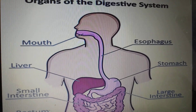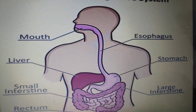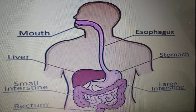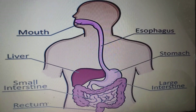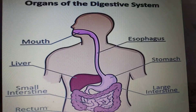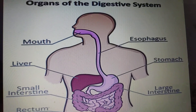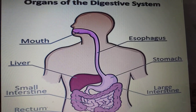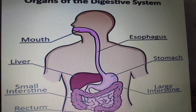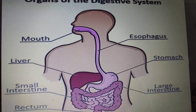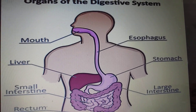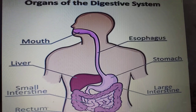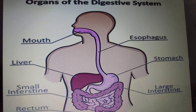The food passes from the mouth to the stomach through a muscular tube called the esophagus. Inside the stomach, the food is broken further into smaller pieces by churning and with the help of chemicals called digestive juices produced by our liver.